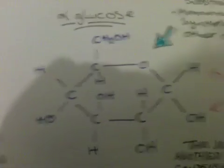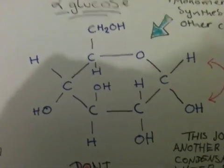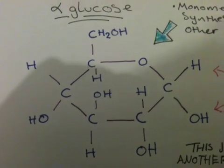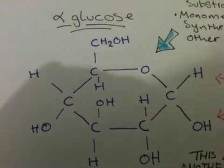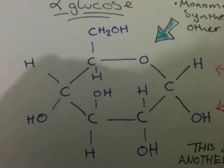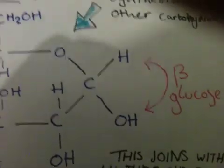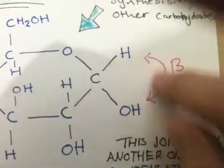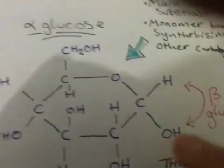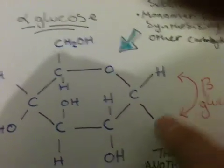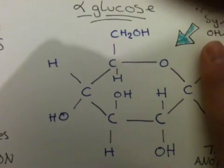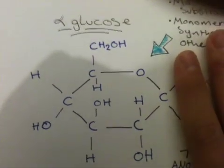An example of this is the alpha-glucose — here's a diagram of it. Now, if you want to make this from an alpha-glucose to a beta-glucose, you literally swap this with that around. So they have the same molecular formula; they just have different structures. Apart from those two positions, the rest is the same.